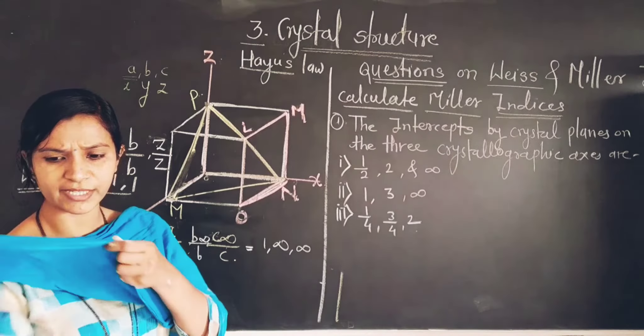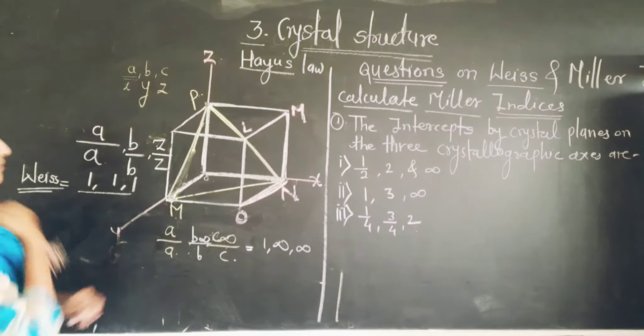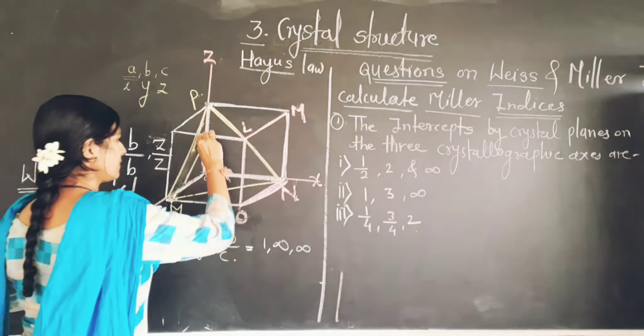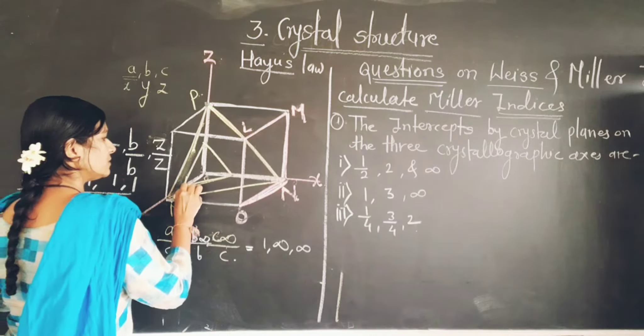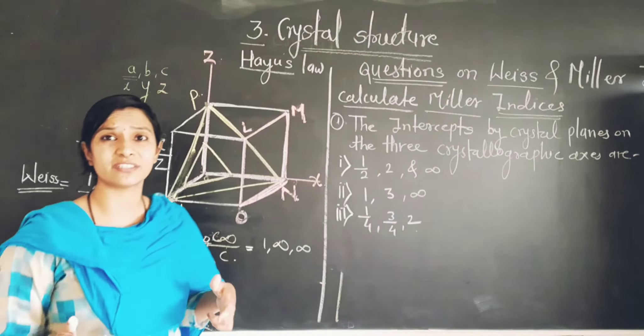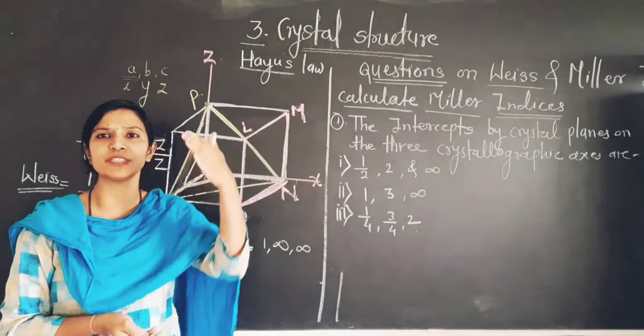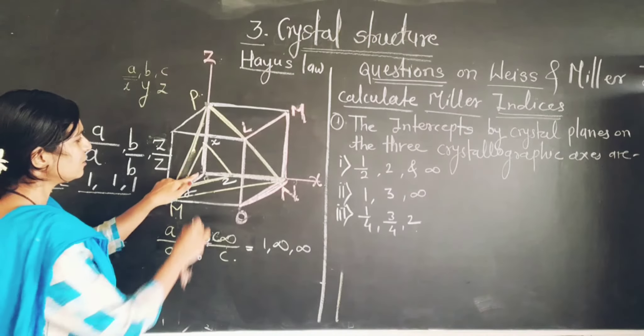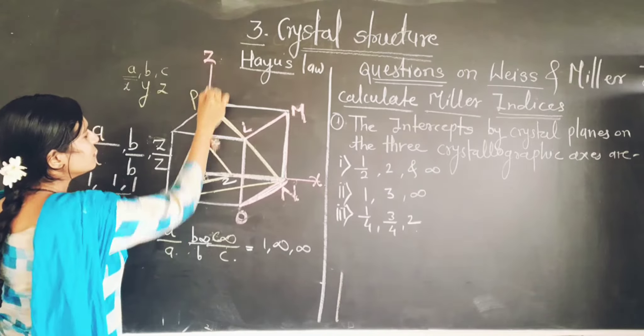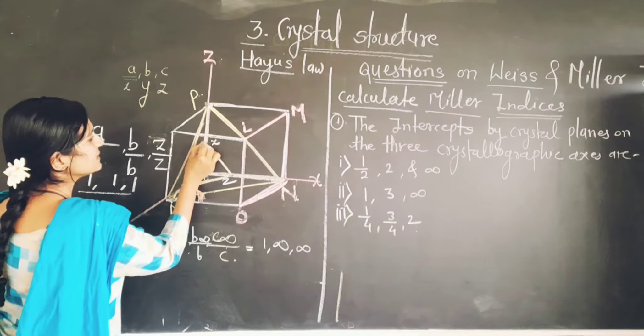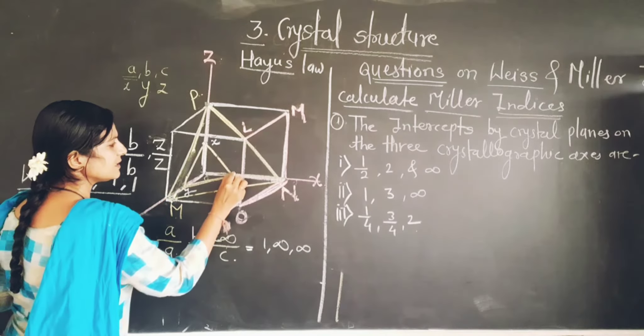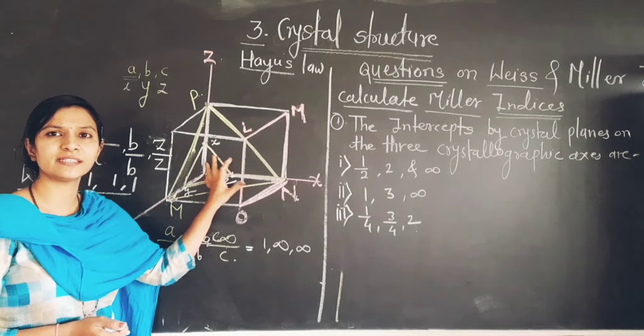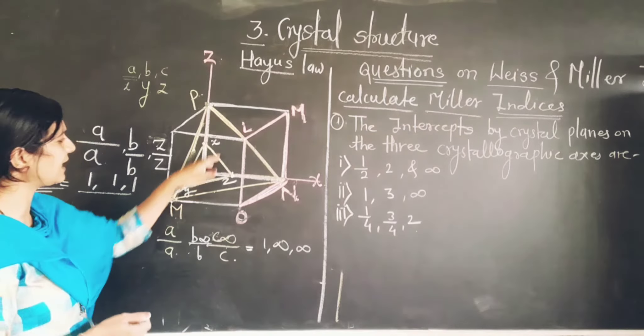Now another term is also very important. I just draw one plane. This plane is cut to the crystal on the Z axis to half. This is also half, and this is also half. Half of the crystal edge is cut along with the X axis, Y axis, and Z axis.